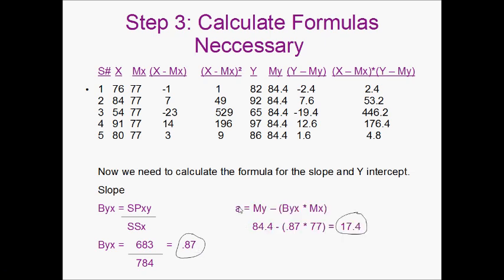Next thing that we're going to calculate is our y-intercept. This is going to be abbreviated by an a. So we're going to take our mean of Y for this formula, subtract our slope times our mean of X. So this is going to be 84.4, our mean of Y, minus 0.87, our slope, times our mean of X, which is 77. This is going to give us an answer of 17.4.